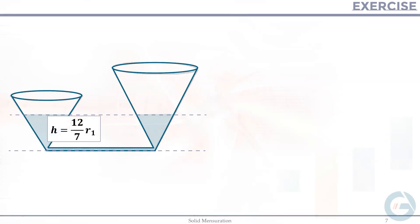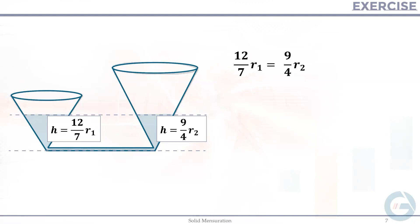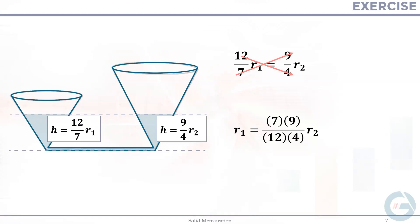Since both expressions are equal to H, we can equate them: (12/7)R₁ = (9/4)R₂. Cross multiplying: R₁ = (7 × 9)/(12 × 4) · R₂ = (63/48) · R₂, which simplifies to R₁ = (21/16)R₂.